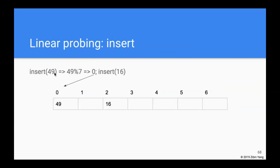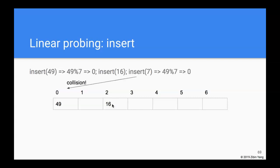Let's say we want to insert the number 49. There are 7 slots; 49 mod 7 is 0, so we put it at bucket 0. Then 16 mod 7 is 2, so we put it there — no problem so far. Now when we want to insert 7: 7 mod 7 is 0, so we go to bucket 0, but it's already occupied, so we move to the next bucket to see if it's available — and it is.